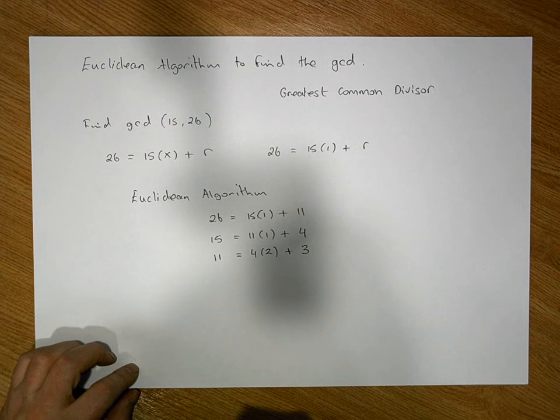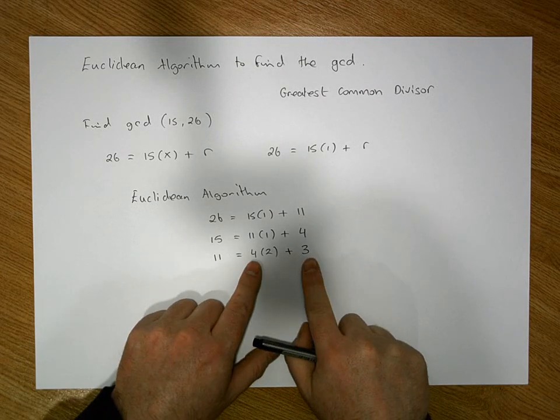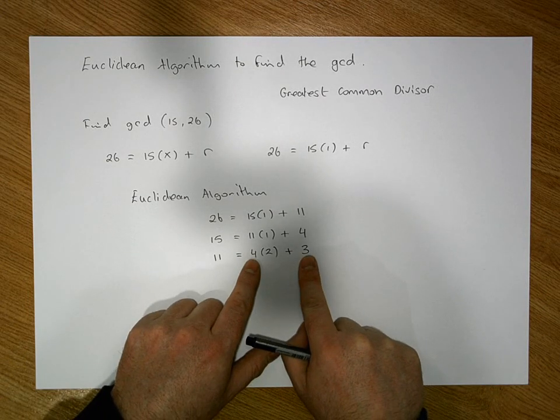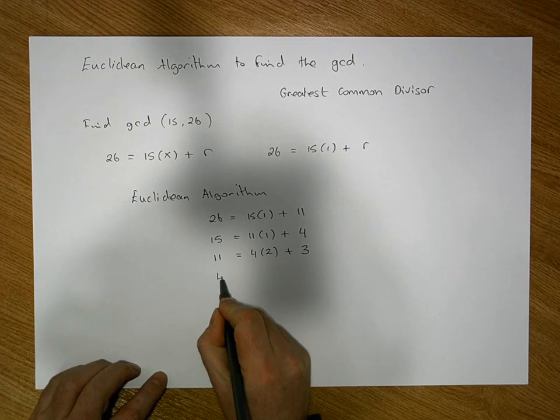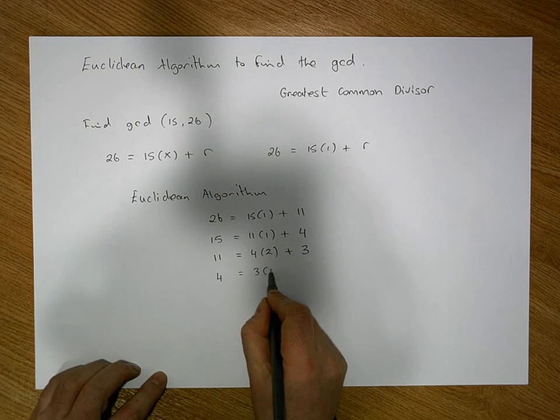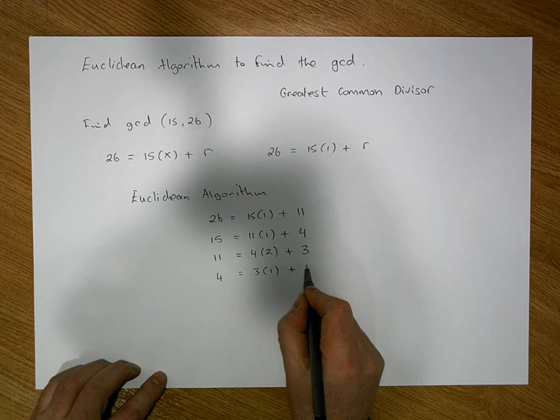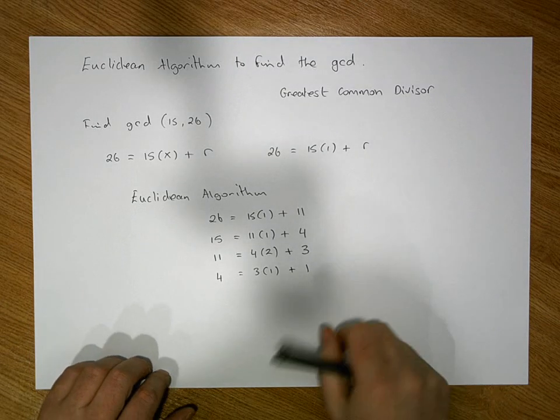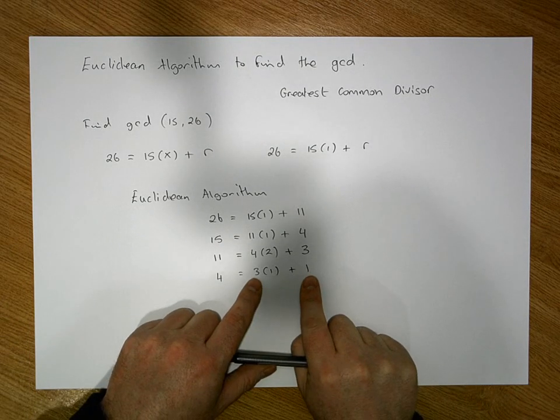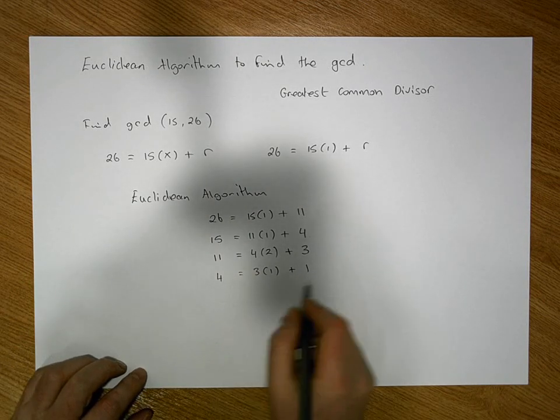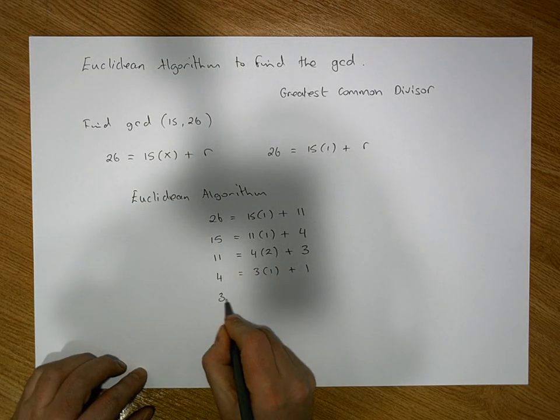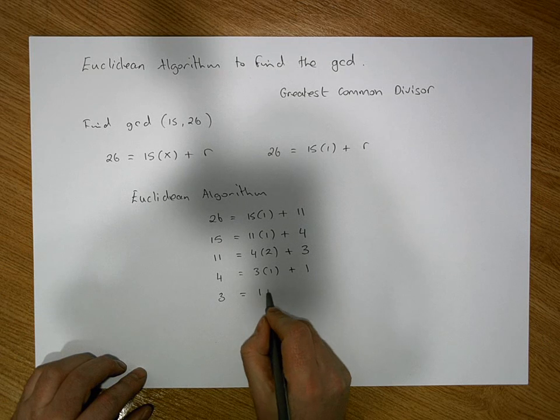We do it again. We look at 4 and we look at 3 and we ask how many times does 3 divide into 4. We have 4 is equal to 3 times 1 plus a remainder of 1. Then we do it again. We ask ourselves how many times does 1 divide into 3. Well, clearly 1 goes into 3 three times, so 3 must be equal to 1 times 3 plus a remainder of 0.